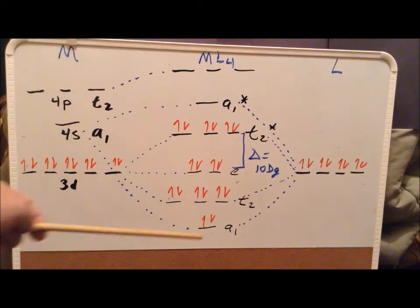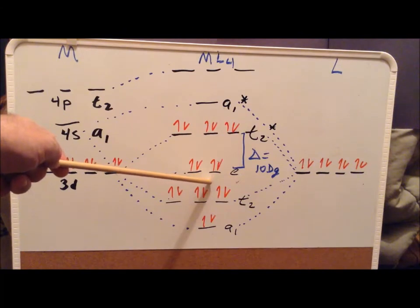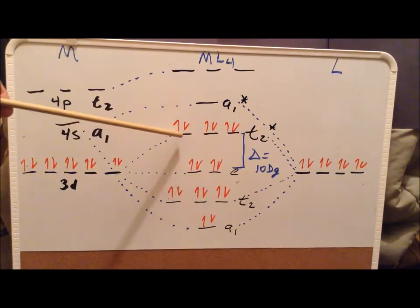So we have 2, 4, 6, 8, 10, 12. So we've gotten 12 electrons just to get up to the non-bonding.